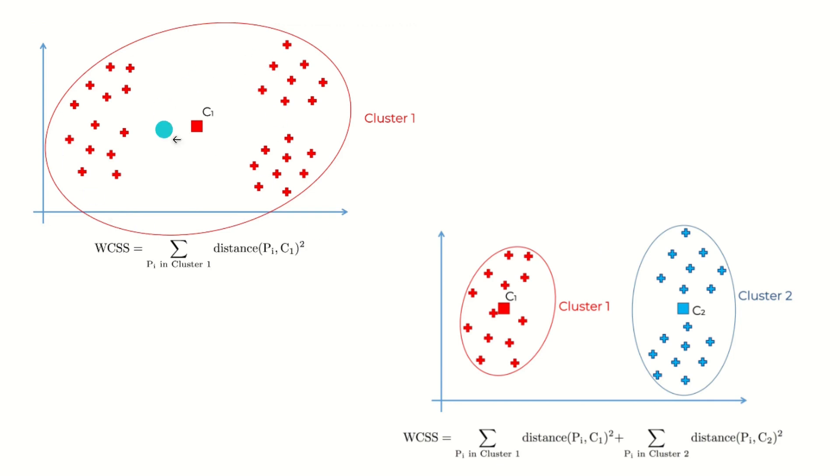Let's suppose we have one cluster available. In this case, C1 is the centroid. We have to find the distance between each and every point in the cluster to C1, then square it, then do the summation. This is how we find the WCSS.